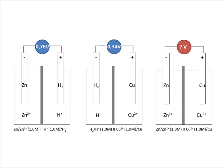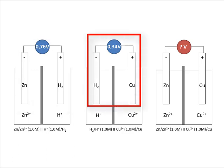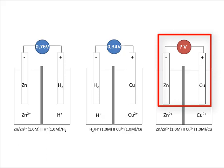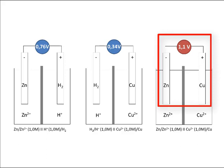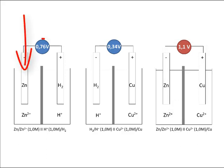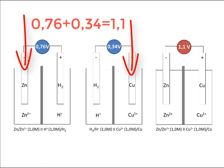Now we have the potential difference between zinc and hydrogen, and between hydrogen and copper. So what is the potential difference between zinc and copper? The zinc electrode has a potential 0.76 volts less than the hydrogen, and copper is 0.34 volts more than the hydrogen. So zinc must have a potential of 1.1 volts less than copper — that's 0.76 plus 0.34.